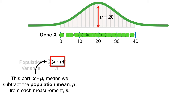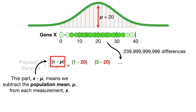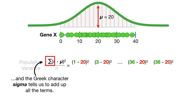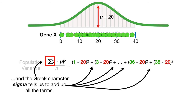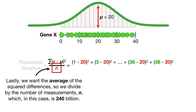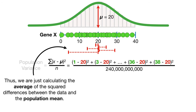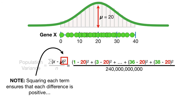This part, X minus mu, means we subtract the population mean, mu, from each measurement, X. The square tells us to square each term. And the Greek character sigma tells us to add up all the terms. Lastly, we want the average of the squared differences, so we divide by the number of measurements, n, which in this case is 240 billion. Thus, we're just calculating the average of the squared differences between the data and the population mean. Note, squaring each term ensures that each difference is positive.